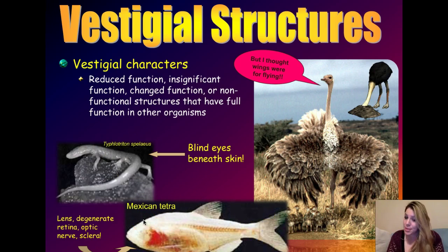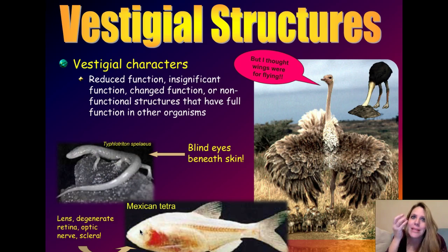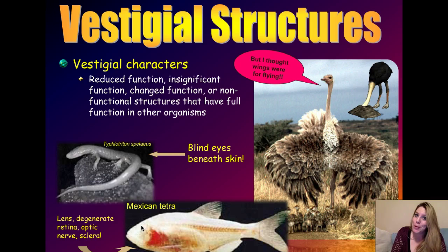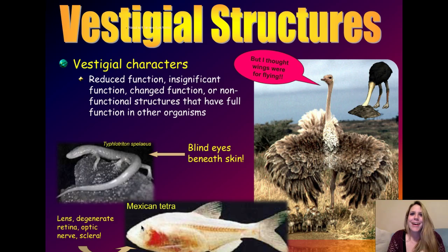Similarly, the Mexican tetra fish has lost his coloration because you don't need color in the dark. He doesn't have full eyes under skin like the salamander does — he actually has only pieces of eyes: a lens, a little bit of a retina, an optic nerve, and a sclera. These are all parts of working eyes, but they don't work because they're not a complete eye. His ancestors had working eyes and lived in the open where there was light. He has lost his eyesight and only has remnant pieces of it — those are vestigial structures.